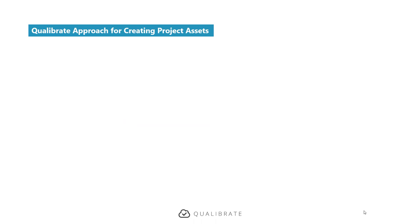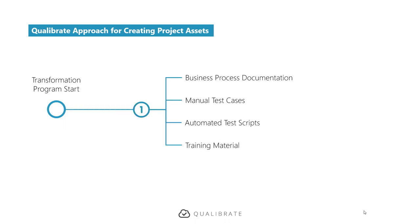With QualiBrate, the idea is that at the start of your SAP transformation program, we give the right tools to the right people. With someone who knows the steps that need to be performed in an SAP application, with one step they can output business process documentation, manual test cases, automated test scripts, and training material. And once you go into production — with bug fixes, new functionality, patches, extensions — every time you change your application, instead of four steps, potentially four different people, and maybe four different tools, with one person and one tool you can update everything at once.